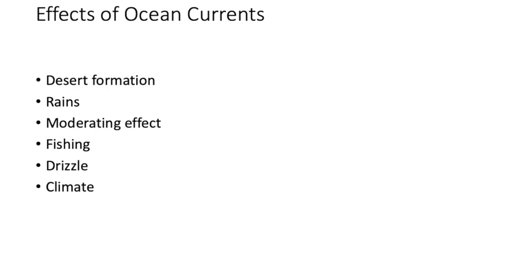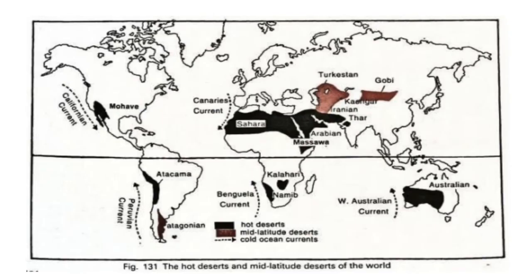The fifth effect is drizzle. Mixing of cold and warm ocean currents creates foggy weather where precipitation occurs in the form of drizzle — an example being Newfoundland. Finally, regarding climate effects: warm and rainy climates in tropical and subtropical latitudes result from the formation of different kinds of currents around continents. Cold and dry climates on the western margin in the subtropics are due to the desiccating effect. Foggy weather and drizzle are found in mixing zones, and moderate climates along the western coast in the subtropics are also found.